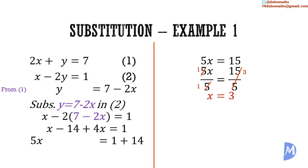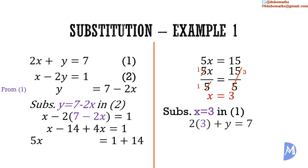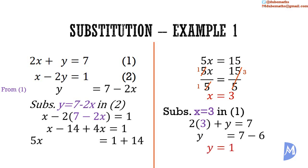Now we substitute x equals 3 in any one of the equations. Substituting in equation 1, we get 2 multiplied by 3 plus y is equal to 7, giving 6 plus y is equal to 7. To make y the subject of the formula, we subtract 6 on both sides. 6 subtract 6 is equal to 0, and 7 subtract 6 is equal to 1. So y is equal to 1.